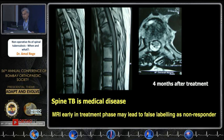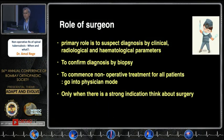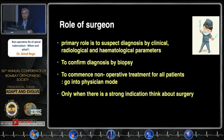I want to stress again that spine TB is a medical disease and a surgeon should not look for any operative indication. What is the role of a surgeon? The basic role is to first suspect the diagnosis of tuberculosis of the spine by clinical, radiological, and hematological parameters — ESR, CRP, MRI, clinical examination. Second, confirm the diagnosis by biopsy, then commence non-operative treatment for all patients. Go into physician mode. Don't think as a surgeon. Don't look for indications. Your indications for surgery are really limited in spinal TB.